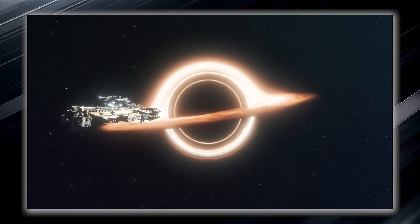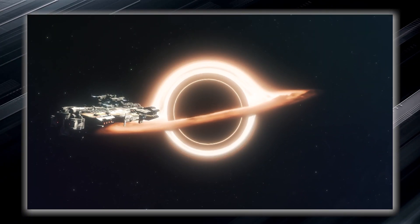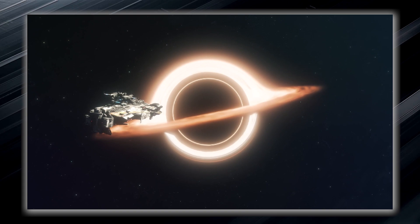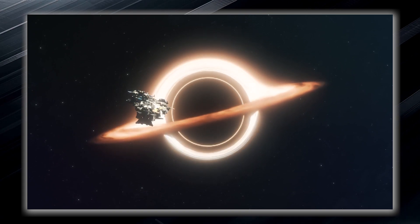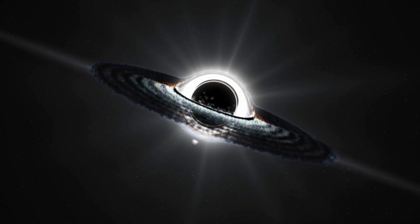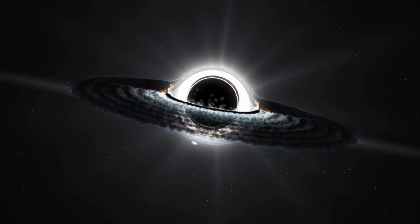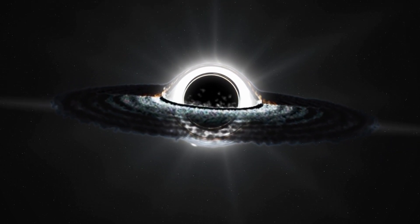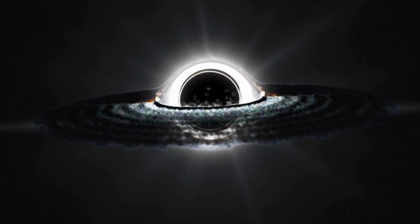Once something, such as an unfortunate spacecraft or even light, crosses its boundary, it can never escape the clutches of the black hole. The event horizon forms an invisible force field that holds everything within it, including light, which is normally considered the fastest entity in the universe.